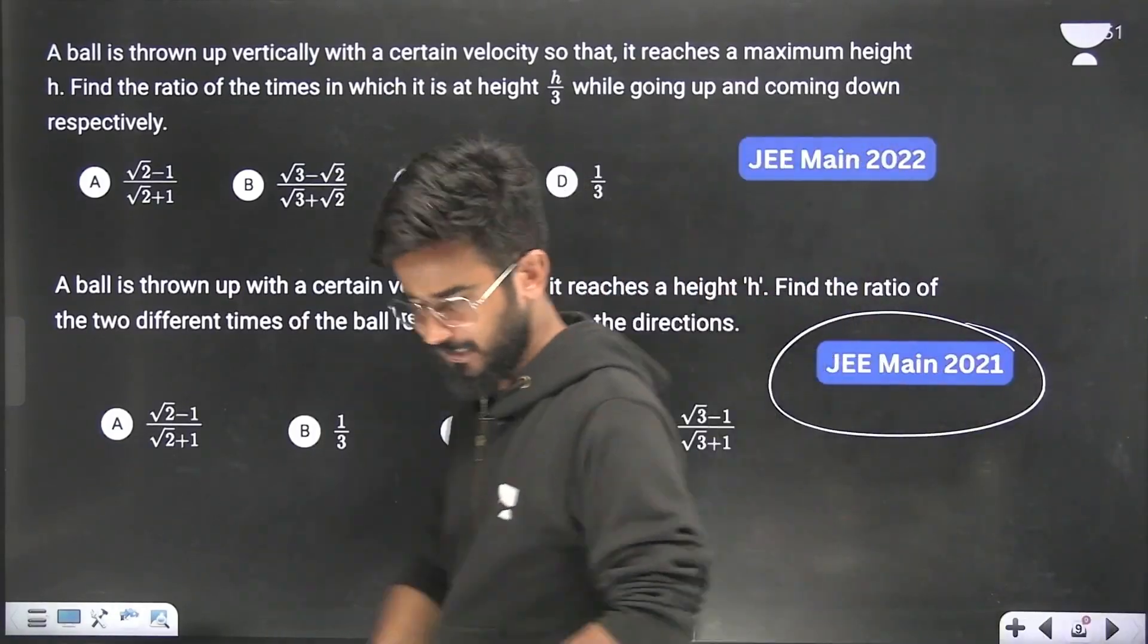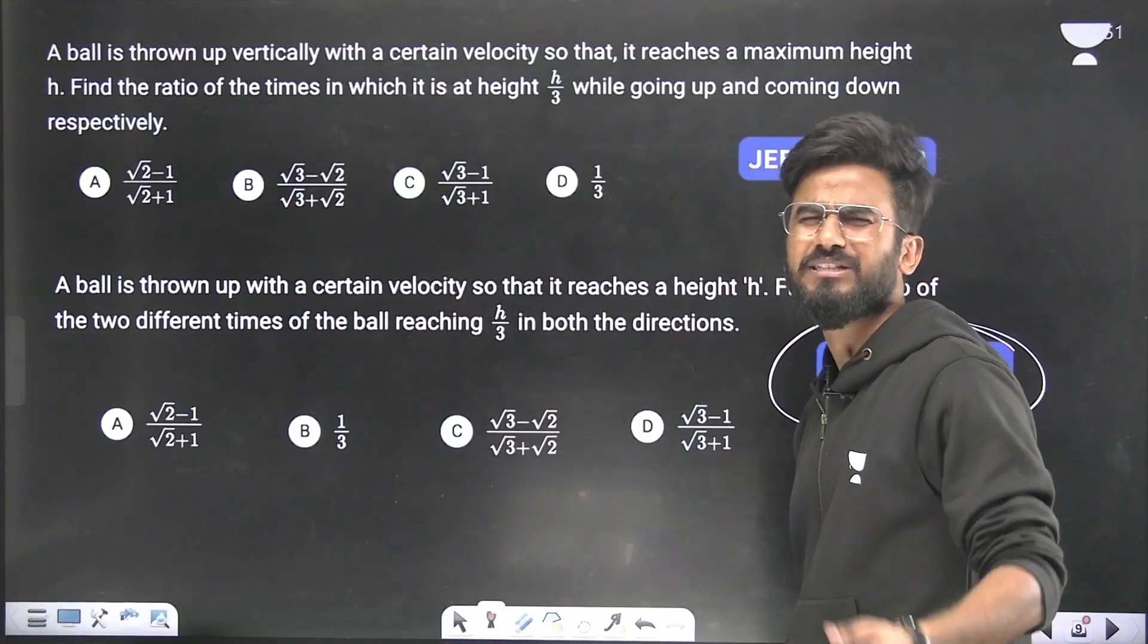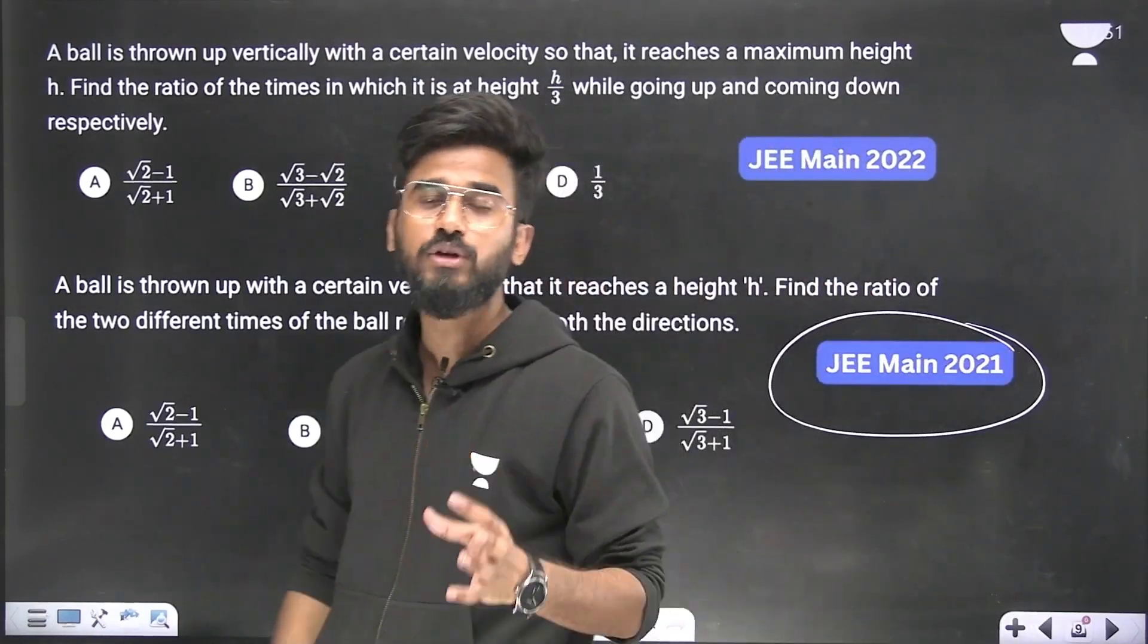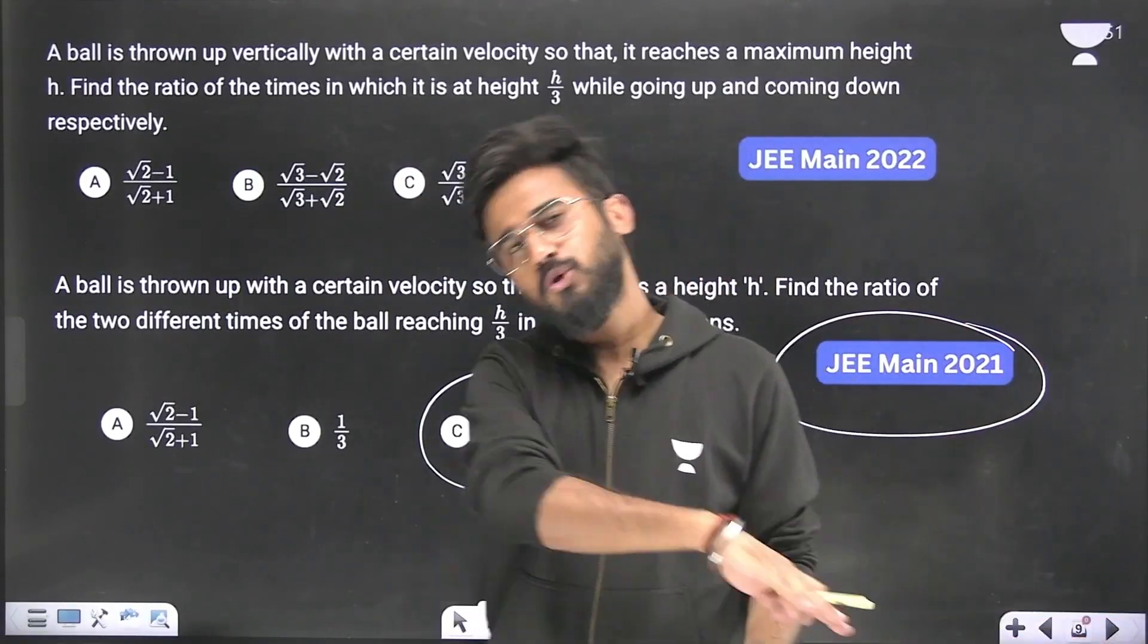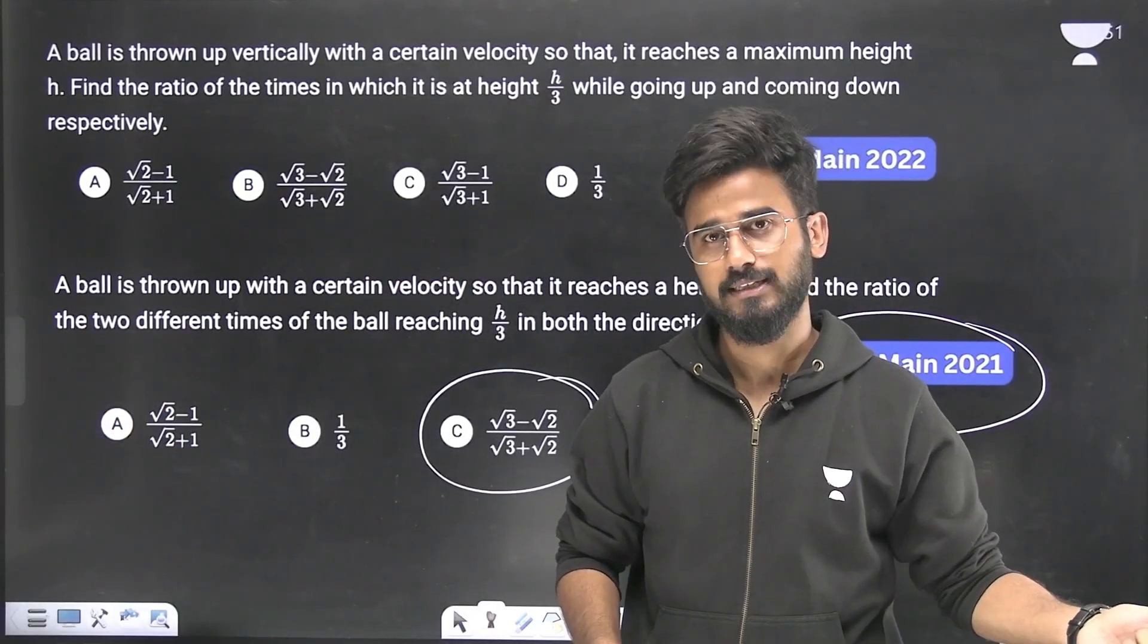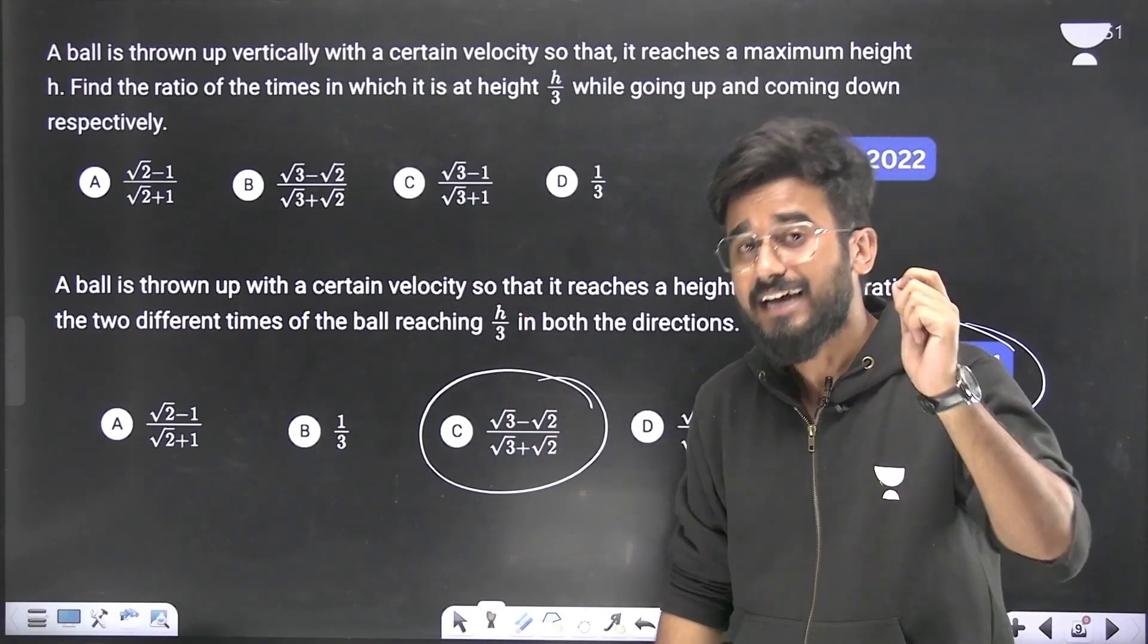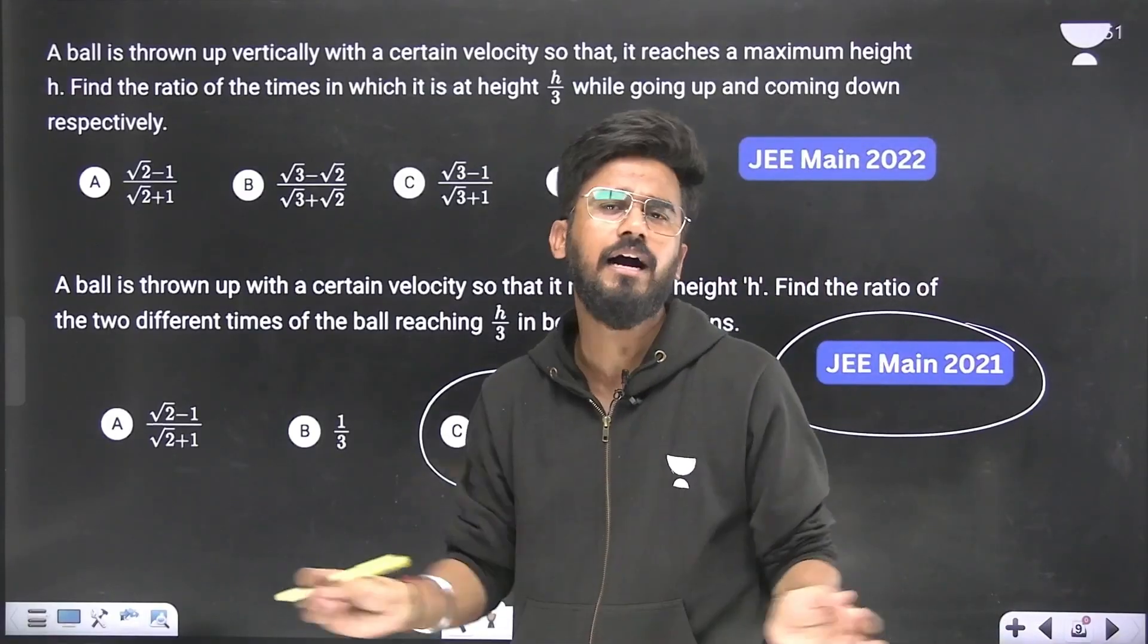See the next question from 2021. Again, the identical question. The ball is thrown up with a certain velocity h by 3, h by 3. Find the ratio t1 by t2. Answer will be root 3 minus root 2. So I am not going to say that you have to write or you have to remember all the PYQs. If you solve the PYQs once from 2000 to 2024, you will have a large idea of what kind of question they are going to ask.